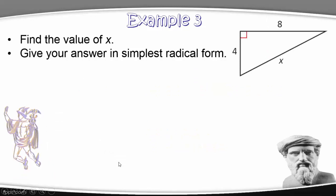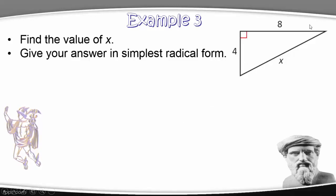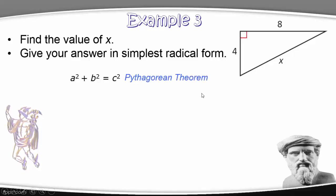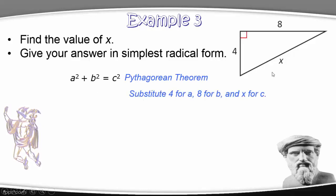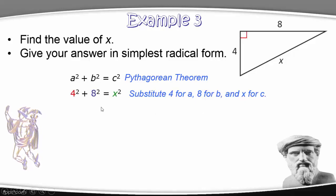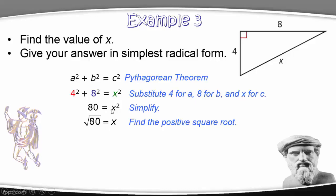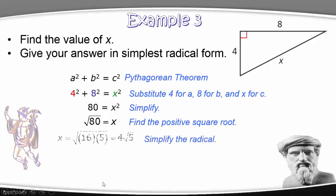Example 3 is similar to Example 1 — we find the value of X given two numeric legs. We substitute 4 for A and 8 for B, so 4 squared plus 8 squared equals X squared. Taking the square root of both sides, we look for the hidden perfect square, which is 16. We pull out 16 as 4 and get X equals 4 times the square root of 5.